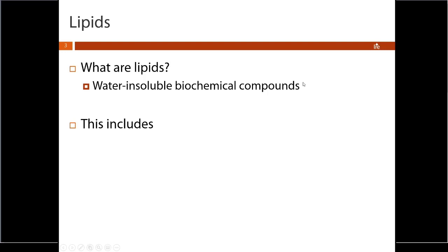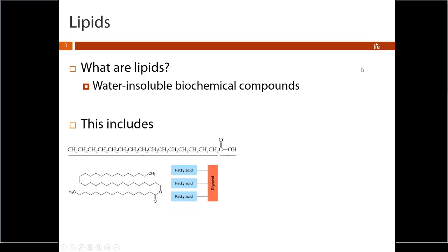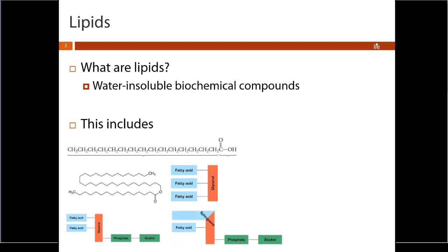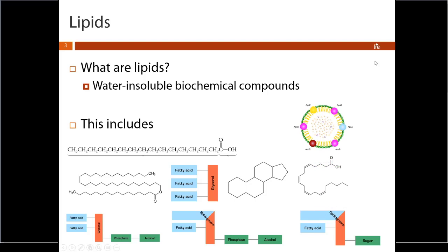We can break lipids up into several different categories. This is going to include fatty acids, waxes, triglycerides, glycerophospholipids, phosphosphingolipids, glycolipids, steroids, eicosanoids, and lipoproteins.